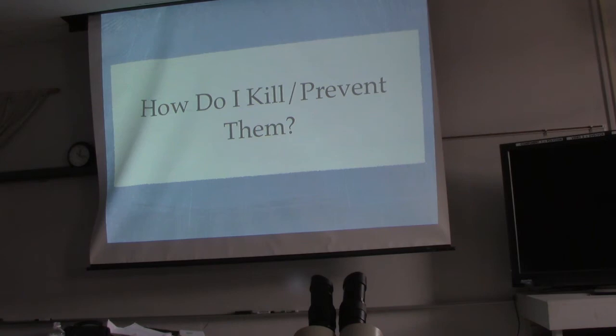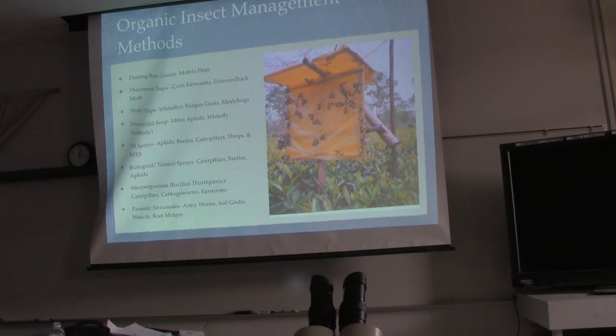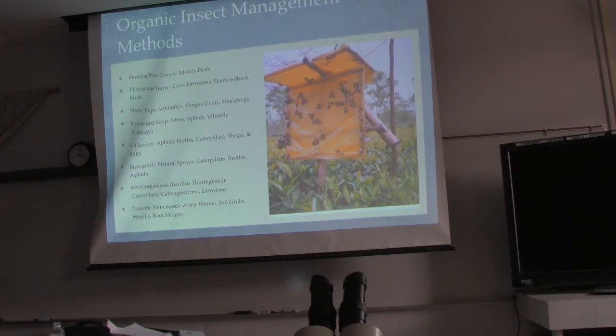How do I kill them? You have organic versus conventional — two very similar approaches with drastically different results. Organic insect management methods: floating row covers — this is basically just like netting that you can bring around. A lot of folks will do this on ginger. It's very expensive — I don't recommend it, but it is effective.